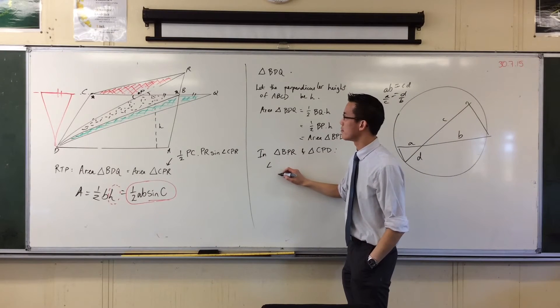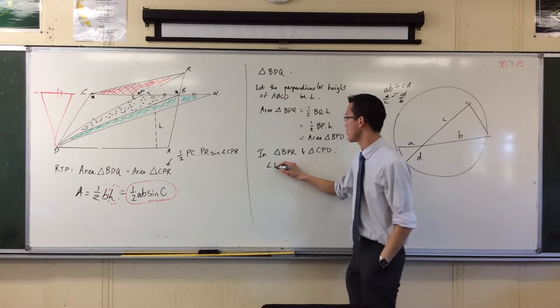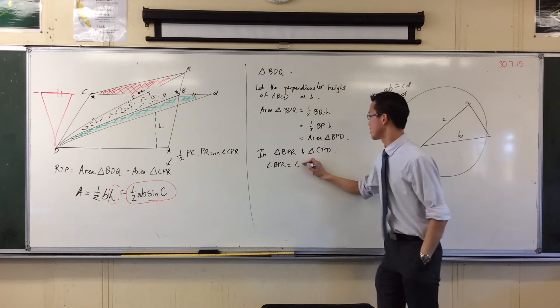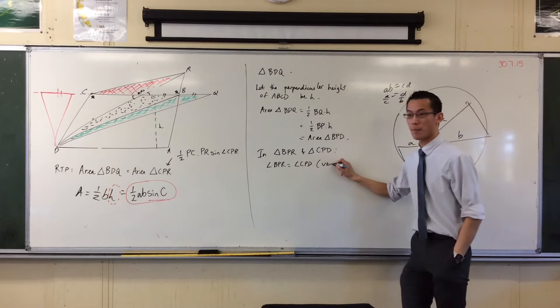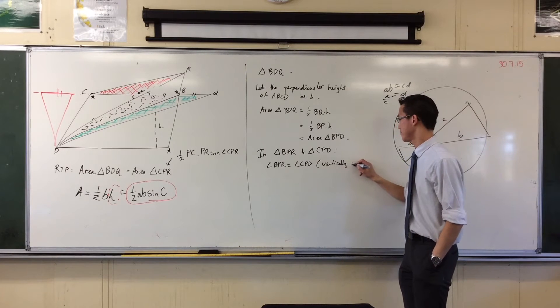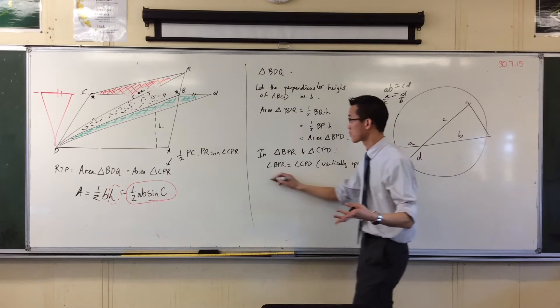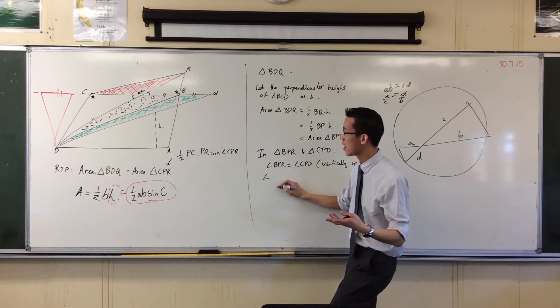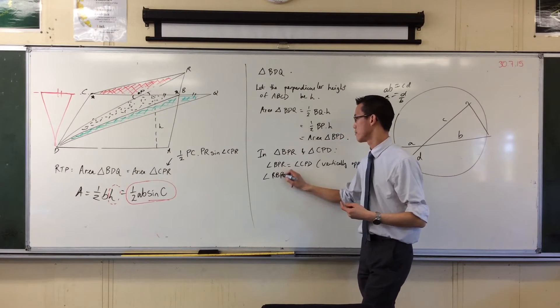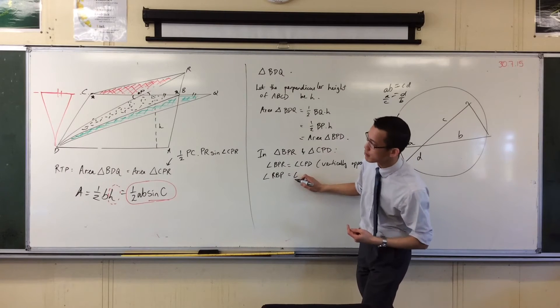I wanted those angles actually, BPR and CPD. They're vertically opposite. And then the other guys through alternate angles, right? So I'd say RBP and DCP.